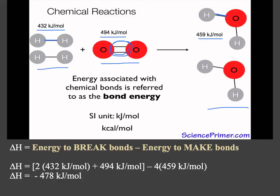Which would be two times the hydrogen bond amount, 432, plus the 494 for the double bond of oxygen. So you would add all of that together. And then you would subtract from that the amount that it takes to make the bonds. And since you've got four oxygen hydrogen bonds involved here, it would be four times the 459 kilojoules per mole. So if you do those calculations, you'll end up with a delta H of negative 478 kilojoules per mole.